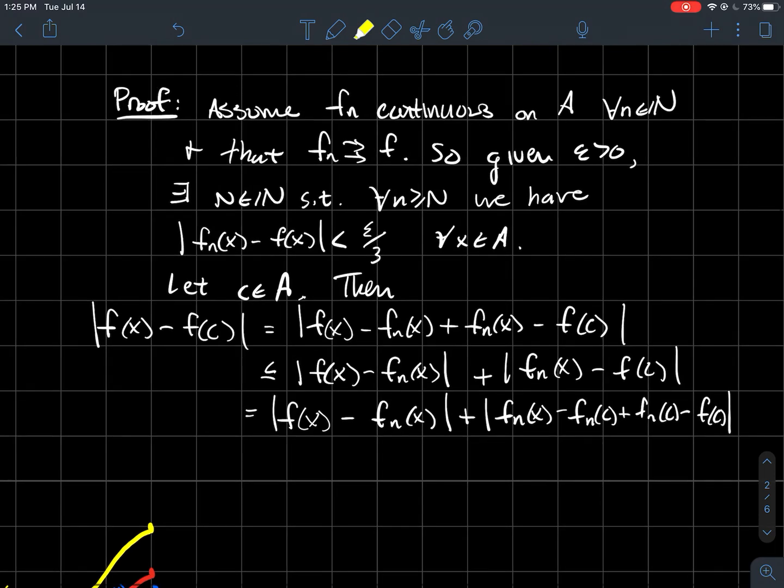And now what I'm going to do is I'm going to do the trick again. I'm going to add and subtract something in here that's kind of sneaky. So I'm going to add and subtract fn of c inside of there. And then I'm going to use the triangle inequality again to split this whole thing up in the next line into the absolute value of this plus the absolute value of this. So I hope that you follow that.